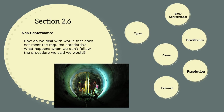Welcome to section 2.6 where we're going to talk about non-conformances. Non-conformance reporting is the process we have to follow when the works we complete don't comply with the project standards or we don't follow the required quality assurance procedures. In this section we're going to talk about what non-conformance reporting is, the types of non-conformances, the identification, cause and resolution of NCRs, and go through an example NCR. By the end of this section you should have a good understanding of NCRs and be able to complete NCRs on your project.